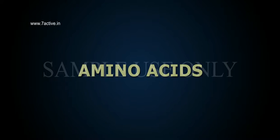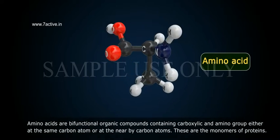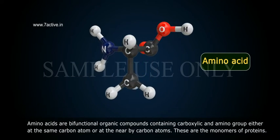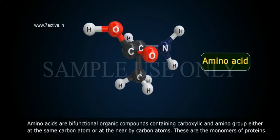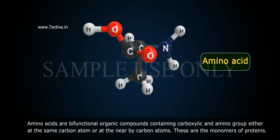Amino Acids — Introduction. Amino acids are bifunctional organic compounds containing a carboxylic group and an amino group either at the same carbon atom or at a nearby carbon atom.